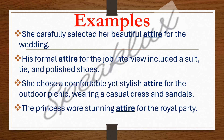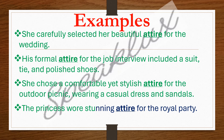Let's see some sentences. She carefully selected her beautiful attire. His formal attire for the job interview included a suit, tie, and polished shoes. She chose a comfortable yet stylish attire for the outdoor picnic, wearing a casual dress and sandals. The princess wore stunning attire for the royal party. In all these sentences I'm talking about the full dressing sense — it may include sandals, accessories — not only the dress. Attire includes all things: accessories, footwear, everything.